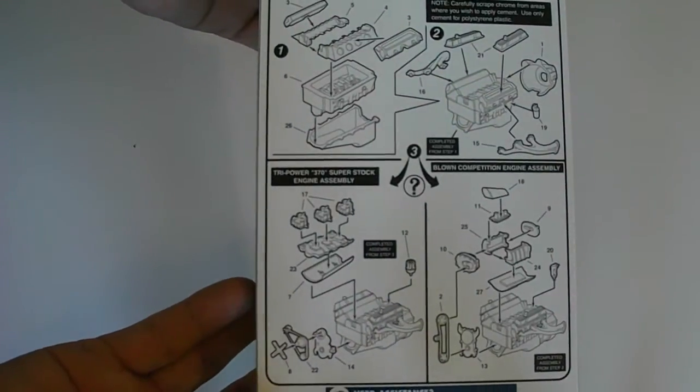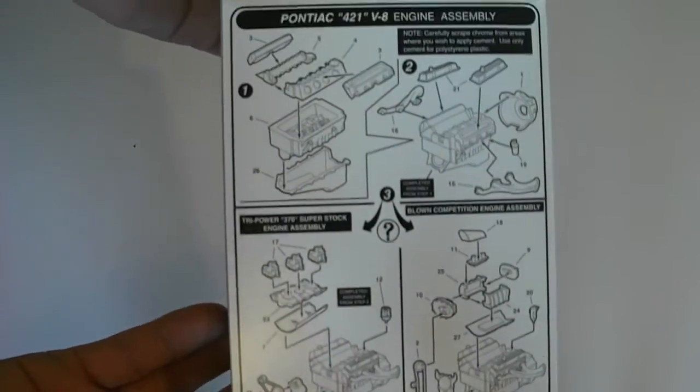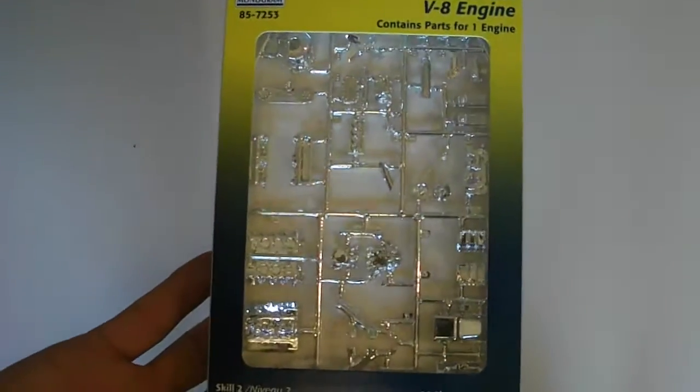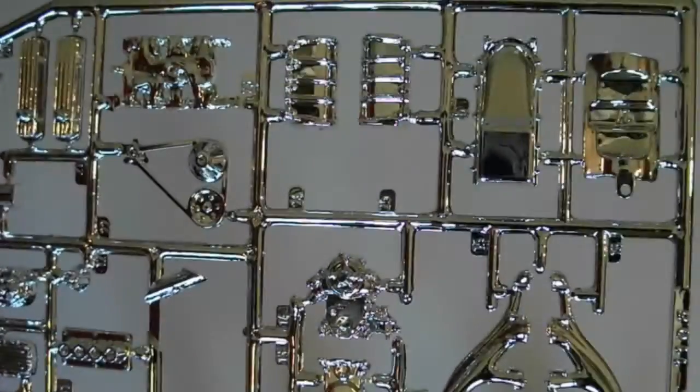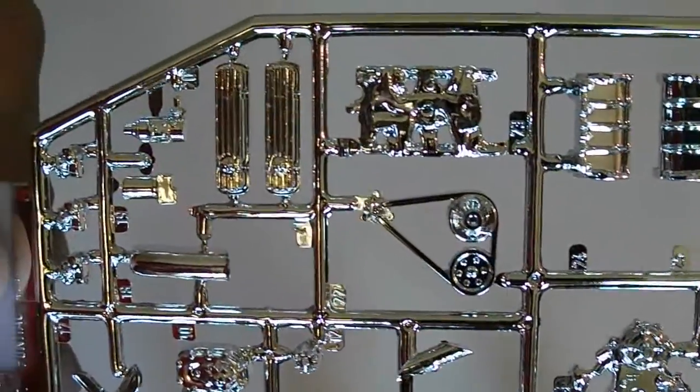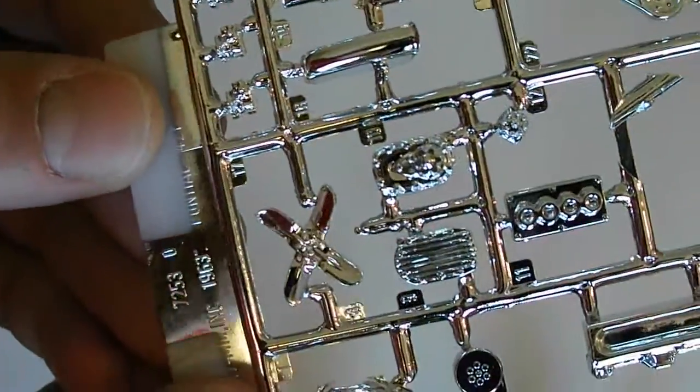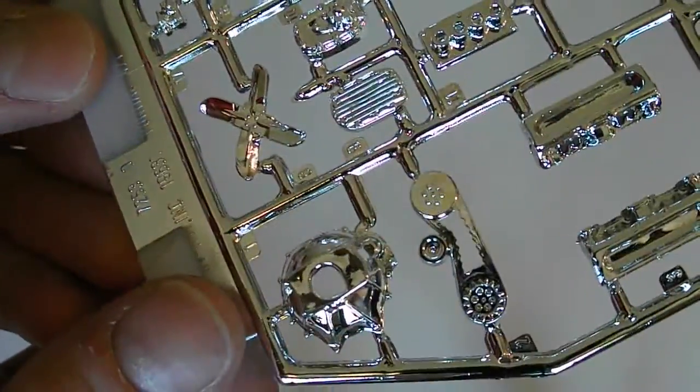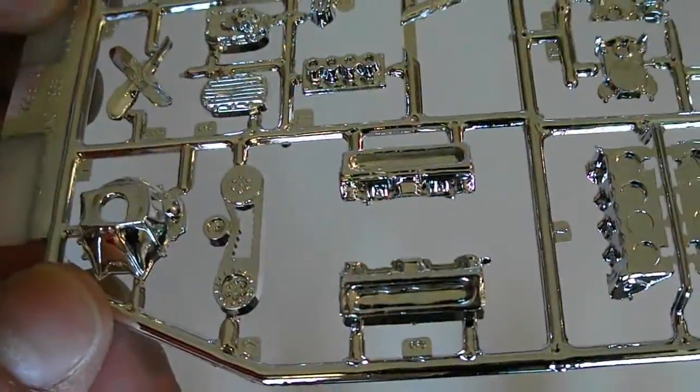The only downside to this one is it only has stock type headers, but easy to switch those out. Now let's take this out and show you the nice parts inside. Looking at the parts, excellent detail overall. Like I said, it would be just as easy to de-chrome these parts, paint them in Alclad or paint them in any color that you like, enamel or acrylic. Anything will work nicely.